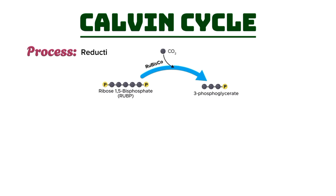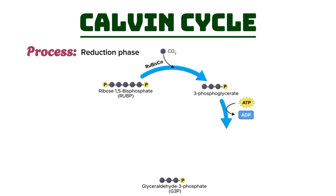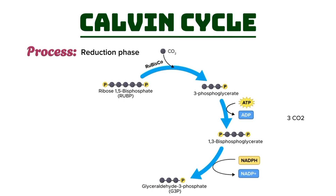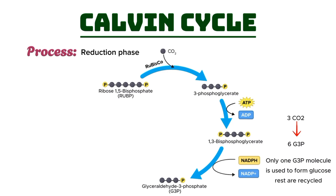Next, we move into the reduction phase. Here, each molecule of 3-PGA is transformed into a molecule of glyceraldehyde-3-phosphate (G3P). This transformation happens in two steps. First, ATP from the light-dependent reactions provides the energy to convert 3-PGA into an intermediate form. Then, NADPH donates high-energy electrons to reduce the intermediate into G3P. It's important to note that for every three molecules of carbon dioxide that enter the cycle, six molecules of G3P are produced. However, only one G3P molecule is used to form glucose or other carbohydrates — the rest are recycled in the next phase.